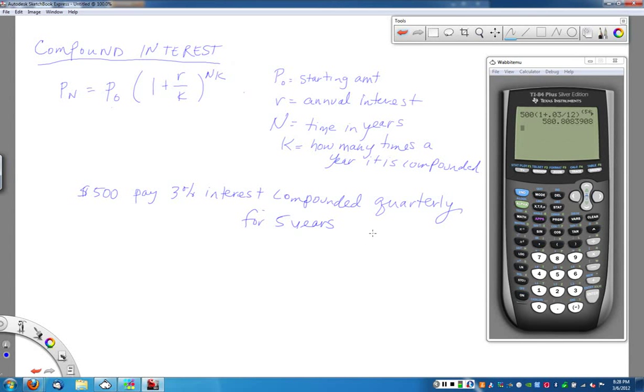So in this case, the only thing that's going to be different, P-naught is still $500. My R value is still .03 for 3% interest. My capital N value is still five years because that's how long I'm doing it, but this time my K value is going to be four because I'm compounding quarterly, which means four times every year.